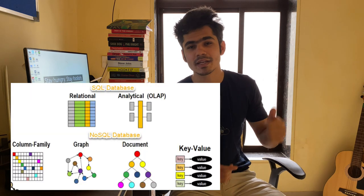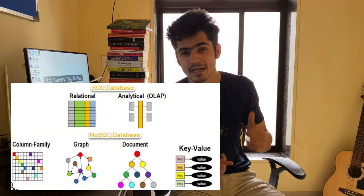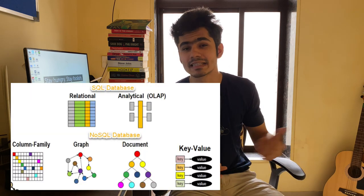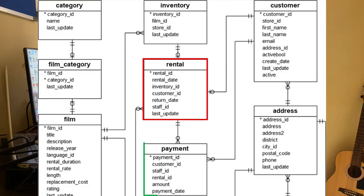On the other hand, we have NoSQL databases, which store data in key-value pair, graph, and document formats. Relational databases can only manage structured data, whereas NoSQL databases can manage structured, unstructured, and semi-structured data. To build a relational database, we need to build a data model so we can understand the relationships between tables.